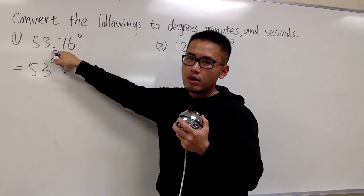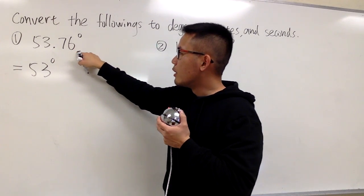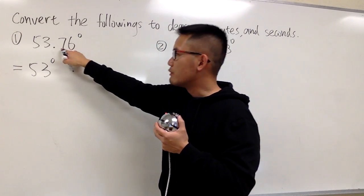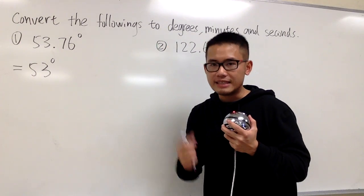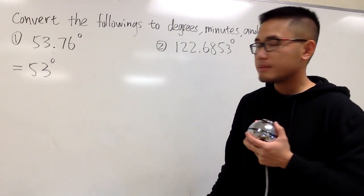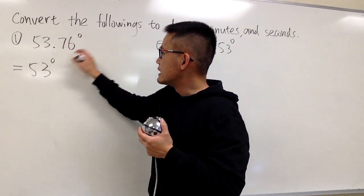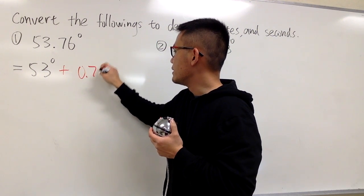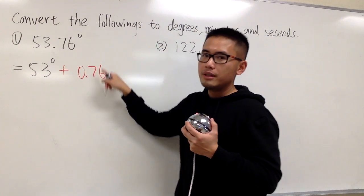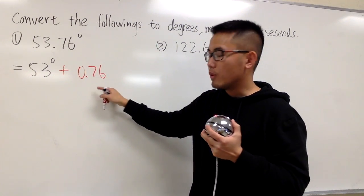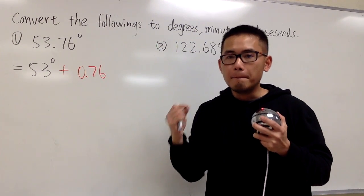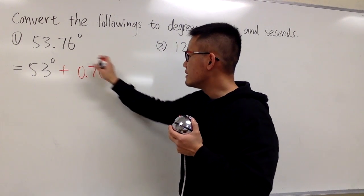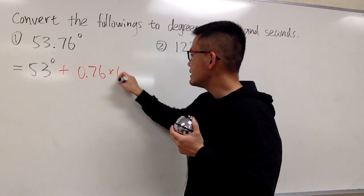However, whenever we have a decimal degrees, this is 0.76 degrees, we have to change that into minutes and seconds. This is the decimal part. We can just say we are going to add 0.76. This is still in degrees. Well, we have to remember there are 60 minutes in one degree. So we will have to take this decimal part and multiply it by 60.